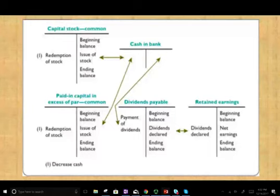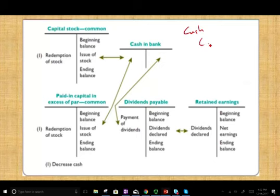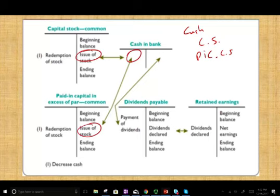Here are the typical accounts used in this cycle. Basically, the first thing the company will do is issue stocks: they will debit cash, credit common stock, and credit paid-in capital common stock. So the initial entry is debit cash, credit common stock, and credit paid-in capital.